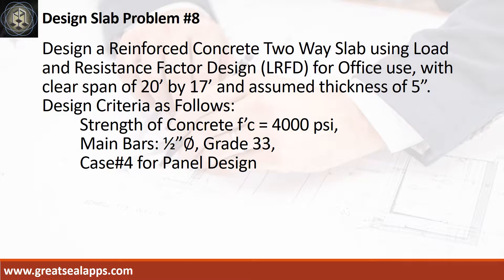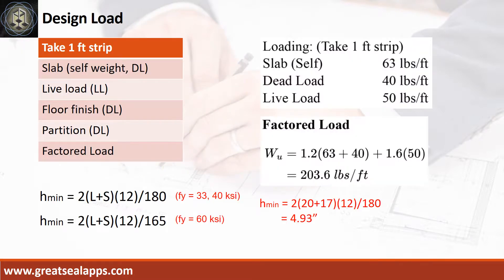Case number 4 for panel design. Given uniform load for a 5-inch thick slab is 63 pounds per square foot. Office live load is 50 pounds per square foot. Other dead load like floor finish and partition is 40 pounds per square foot, for a total factored load of 203.6 pounds per square foot.